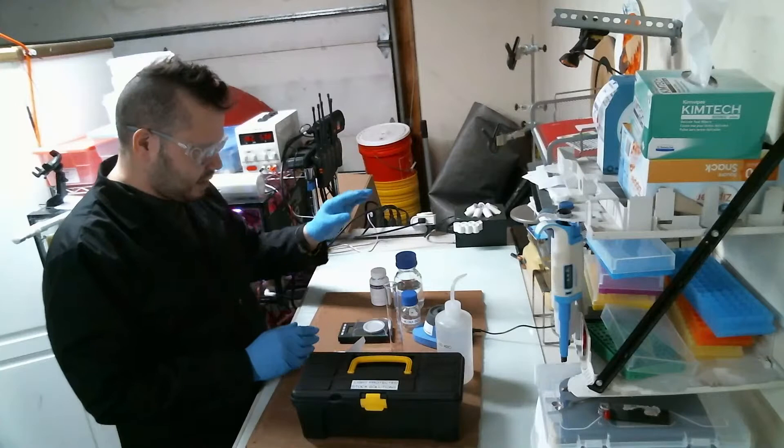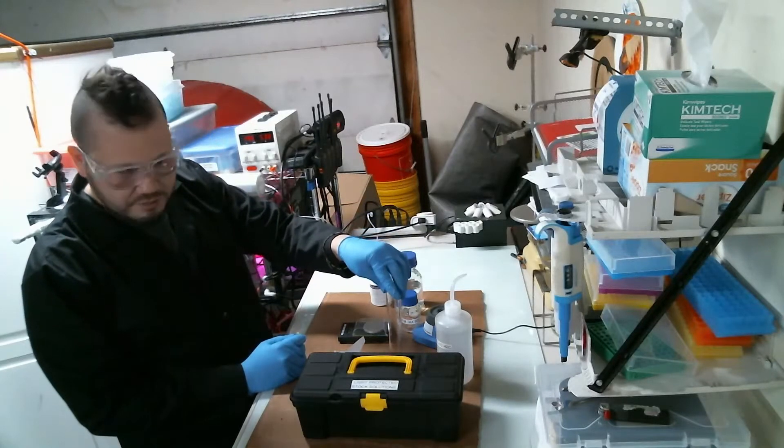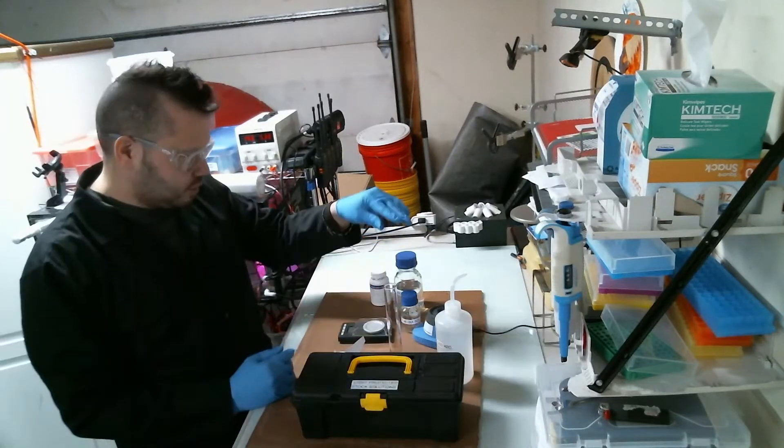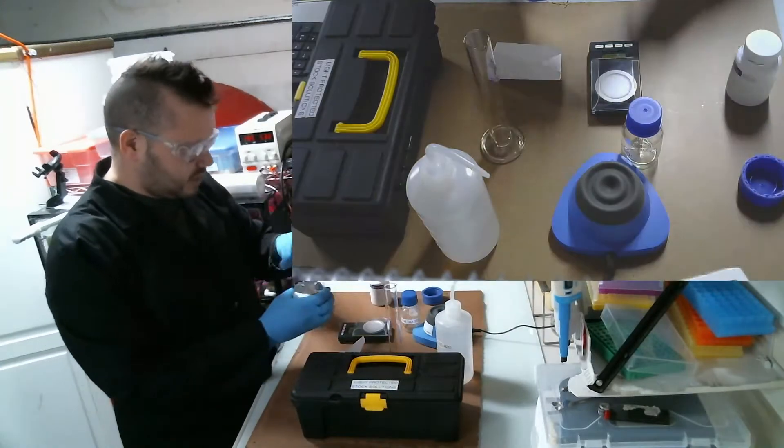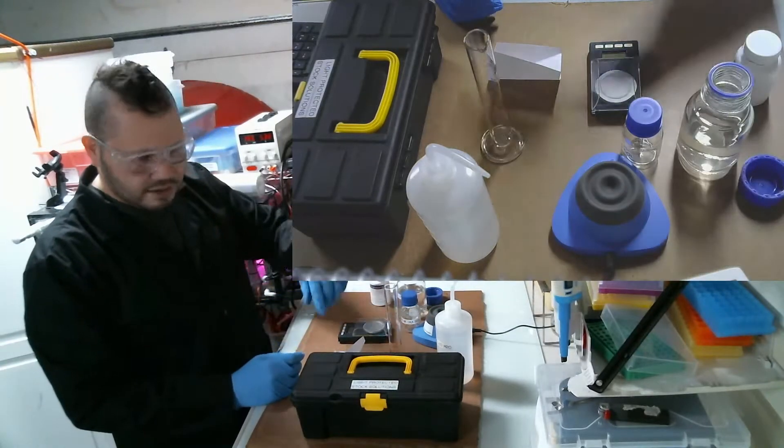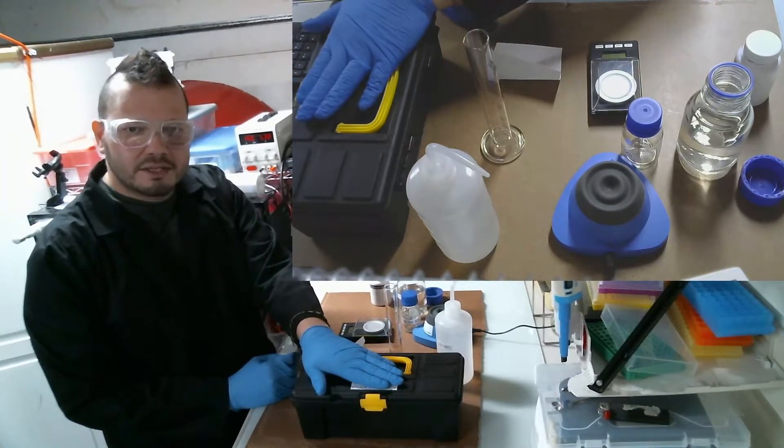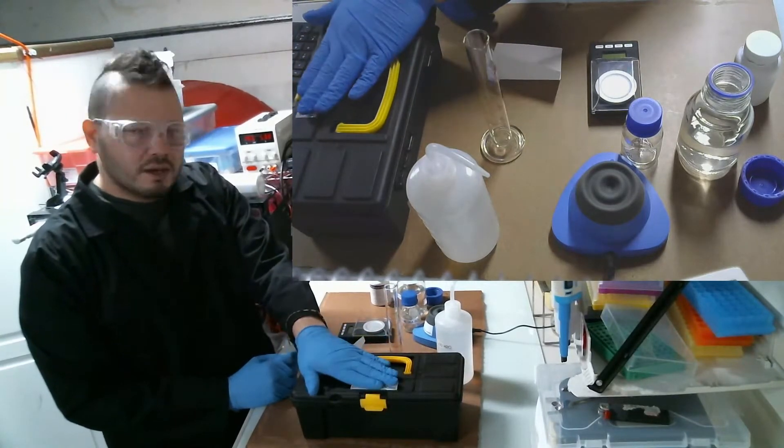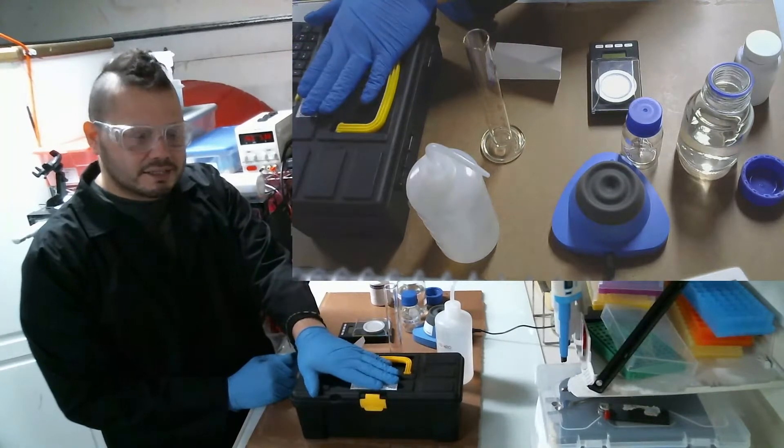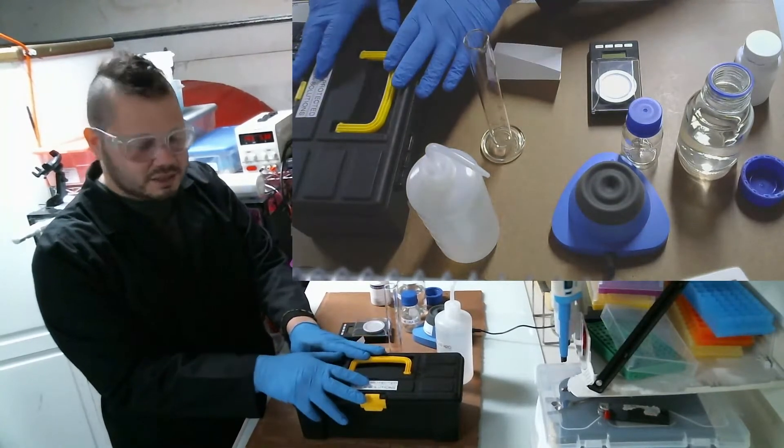First, what I need is 25 milliliters of sodium hydroxide. And actually what I'll do here is I'll show you what I have. I got this box where I keep all my light-protected things. So in this case, indoleacetic acid is very light sensitive, so I use this box to protect it.